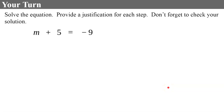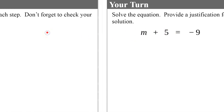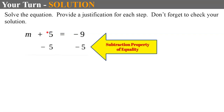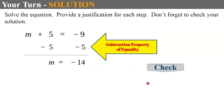Your turn — solve, justify, and check your solution. Pause and come back when you're ready. Welcome back. I identify that m, my variable, is being added by 5. The inverse of add 5 is to subtract 5; the justification is the subtraction property of equality. The zero pair leaves m, and negative 9 plus negative 5 is negative 14. Checking by replacing m with negative 14: negative 14 plus 5 is indeed negative 9, and it checks.